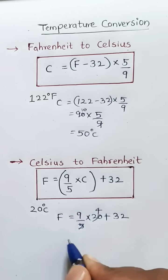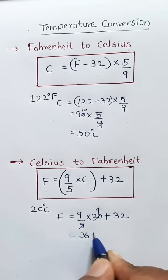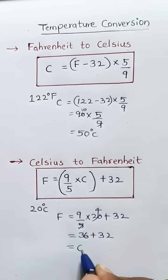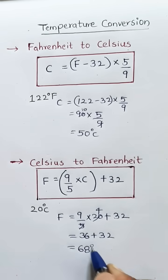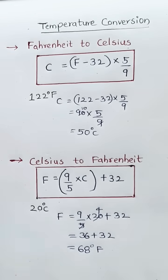9 by 5 into 20: 5 goes into 20 four times, 9 times 4 is 36, plus 32 equals 68. Therefore, 20 degrees Celsius equals 68 degrees Fahrenheit.